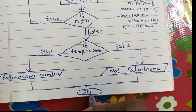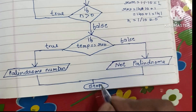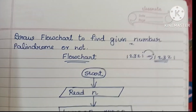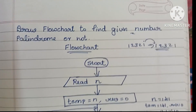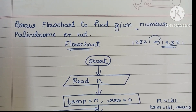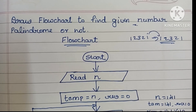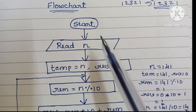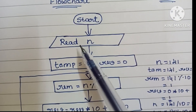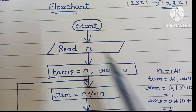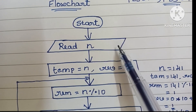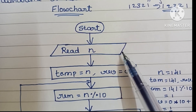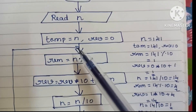So this is the flowchart to find whether a given number is a palindrome or not. It starts with a start statement written within an oval shape. Next we read n, written within a parallelogram shape.